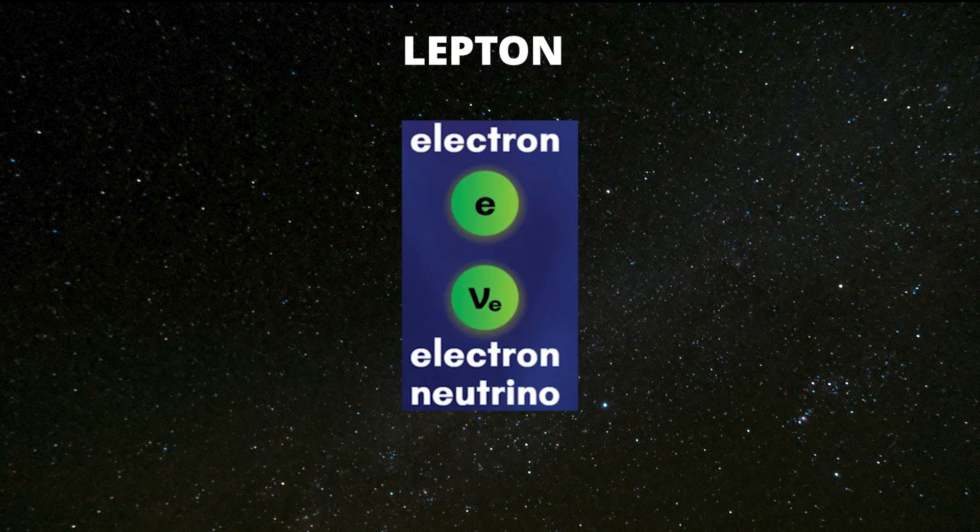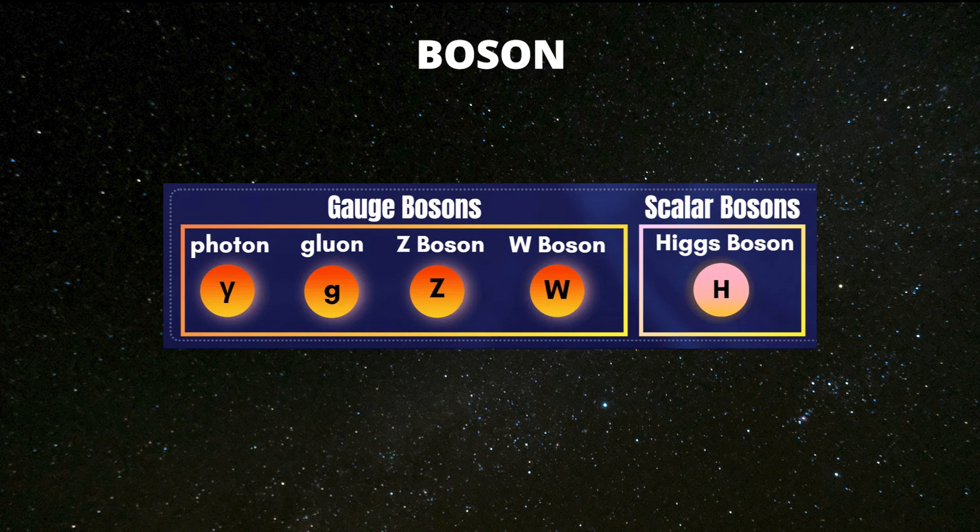The second is bosons. These are the particles that carry forces, acting as force mediators between fermions. These are of four types. Photon carries the electromagnetic force responsible for light and electricity. Gluons carry the strong nuclear force, which holds quarks together within protons and neutrons. W and Z bosons carry the weak nuclear force, which is responsible for radioactive decay. And Higgs boson gives particles mass through its interaction with them in the Higgs field.